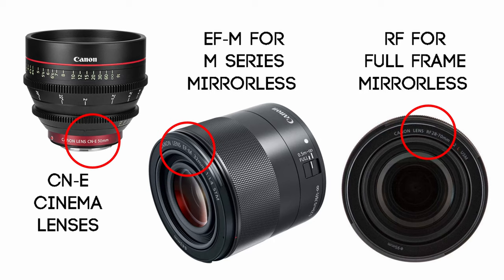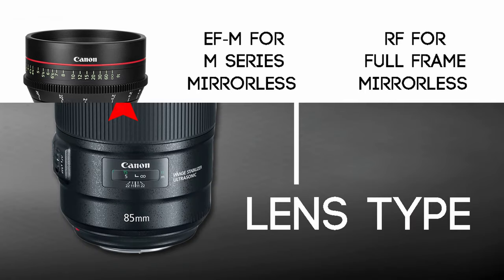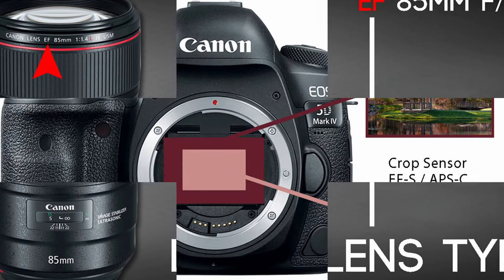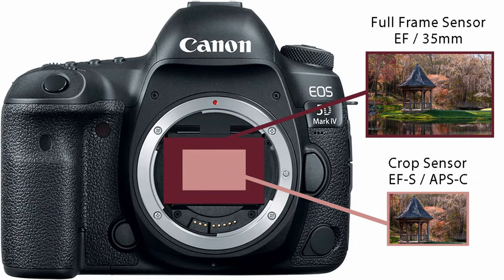Other lens types include CNE, which are specialty cinematography lenses; EF-M lenses for the M-Series mirrorless camera system; and RF lenses for the full-frame mirrorless camera bodies. You need to know the lens type — whether it's EF or EF-S — so you will know if it's compatible with your camera and whether you will have a crop factor with that lens.